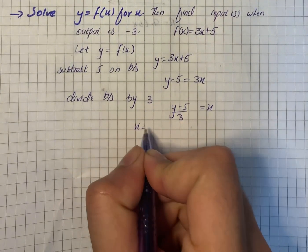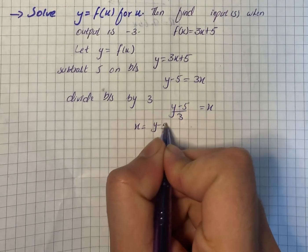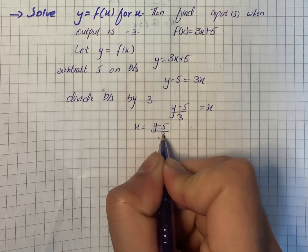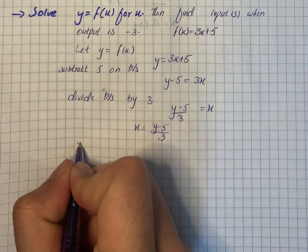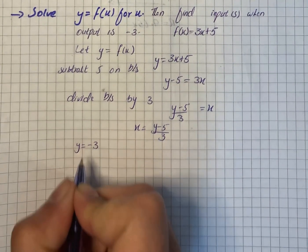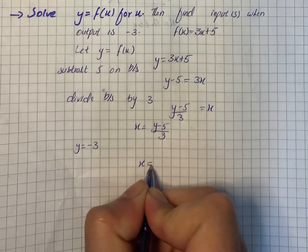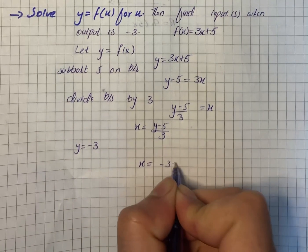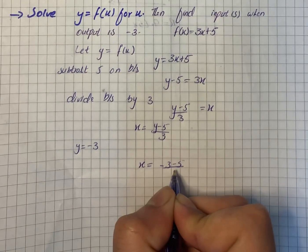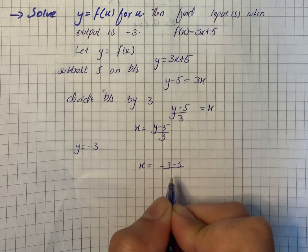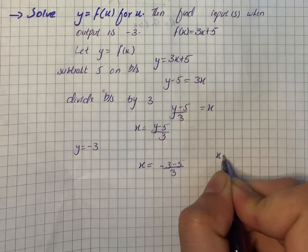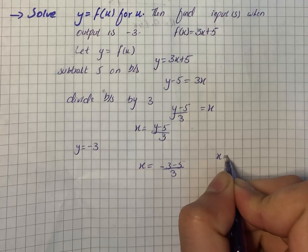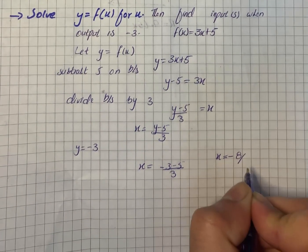So when y is equal to minus 3, we can find x. x is equal to minus 3 minus 5 by 3, so x is equal to minus 8 by 3.